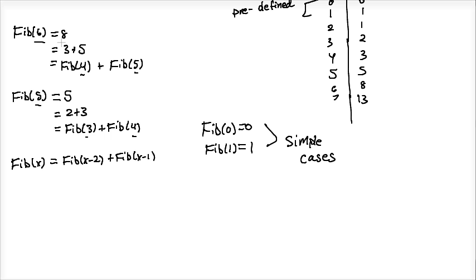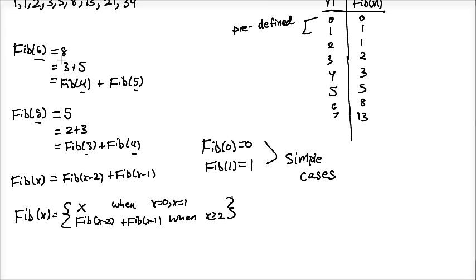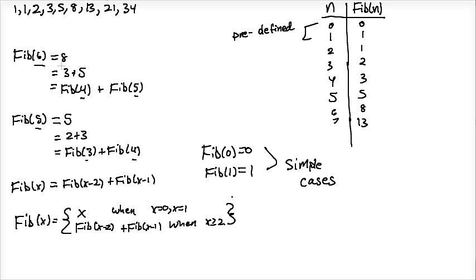So if you wanted to mathematically define this precisely, you could say Fibonacci of x equals x when x equals 0 or x equals 1, and Fib x minus 2 plus Fib x minus 1 when x is greater than or equal to 2. So we have defined the recursive process by looking at the pattern. Now, because of this, the coding is the easy part, we're going to go ahead and code this in Python.